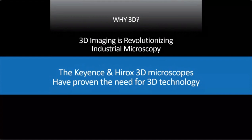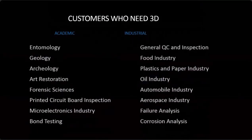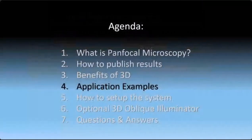3D is revolutionizing the industrial microscopy world. Companies like Keyence and Hirox have clearly proven the need for 3D technology with their 3D microscopes — they're wonderful but much more expensive. Our system goes right onto your own microscope, improves diagnosis, increases productivity, and reveals hidden depth information. Customers include academics, geologists, archaeologists, food industry, and any general QC or inspection company that makes real-world objects and needs a 3D microscope.